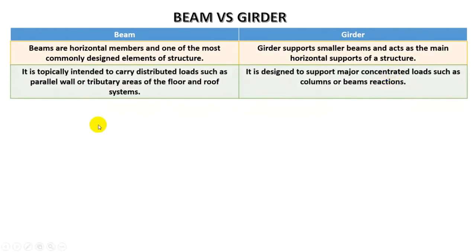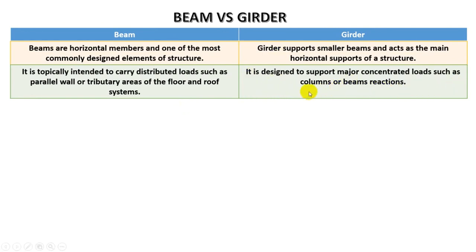A beam is typically intended to carry distributed loads such as parallel wall load or the tributary area of a floor or roof system. We all know that the beam carries perpendicular or parallel load from wall, floor, and also from the roof system.